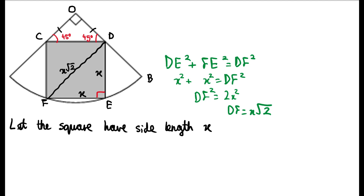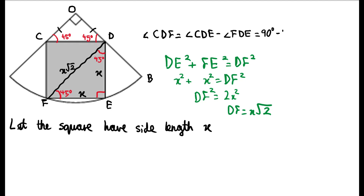Since line DE is equal to line FE, triangle DEF is isosceles, and this means that angles EFD and FDE are equal. Since angle FED is a right angle, this means that both angles EFD and FDE are 45 degrees. We also have that angle CDF equals angle CDE minus angle FDE, which is 90 degrees minus 45 degrees, giving 45 degrees. So angle ODF is 45 degrees plus 45 degrees, which we can replace with a right angle.